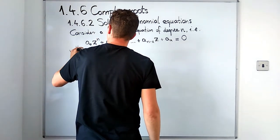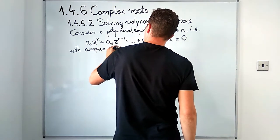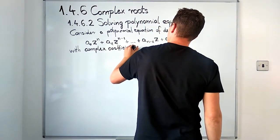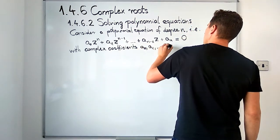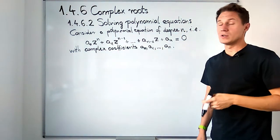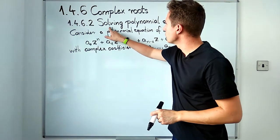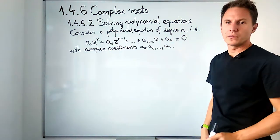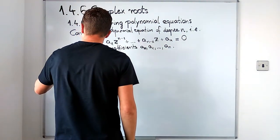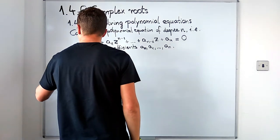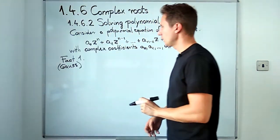So a₀ to aₙ are complex coefficients. And I'm going to tell you about a few general results which are very important, and it will show you just how useful complex numbers are. Let me start by the first one. I'm giving you these results as facts - again, I'm not going to prove them, they go beyond the scope of this module.